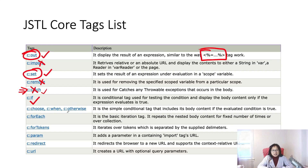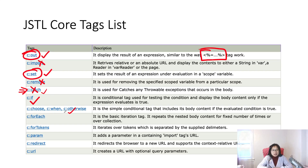c:if is for a single if condition — it doesn't have an else. If you want if-else or multiple else conditions, you can use c:choose with c:when and c:otherwise. c:otherwise acts as the default case. This is similar to a switch statement, or like an if-else-if chain.